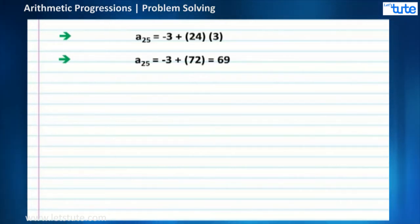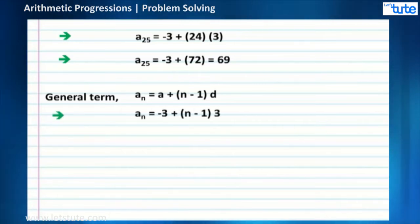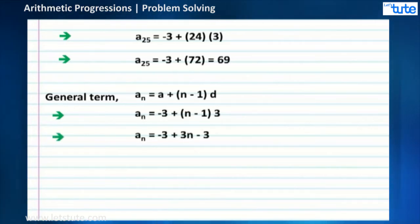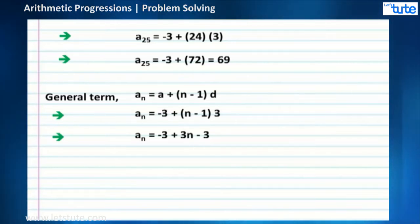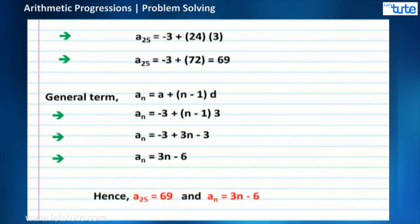Now we have to find the general term. Using the same formula, an = a + (n-1) × d, and substituting the values, we get an = -3 + (n-1) × 3. Opening the brackets: -3 + 3n - 3 = 3n - 6. Hence, a25 = 69 and an = 3n - 6.